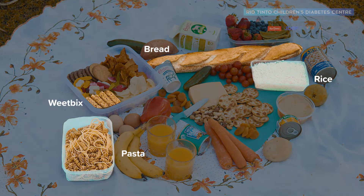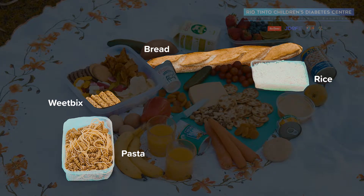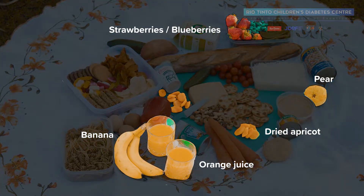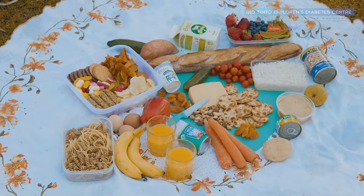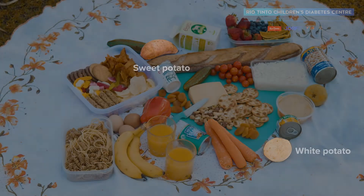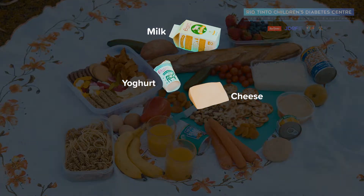Do grains and cereals contain carbohydrate? Yes, all grains and cereals contain carbohydrate. Does fruit contain carbohydrate? Yes, all fruits have carbohydrate. What about vegetables? Do they contain carbohydrate? Most vegetables have some carbohydrate, particularly starchy vegetables. What do you think about milk, cheese and yogurt? Yes, all of these have the carbohydrate lactose.